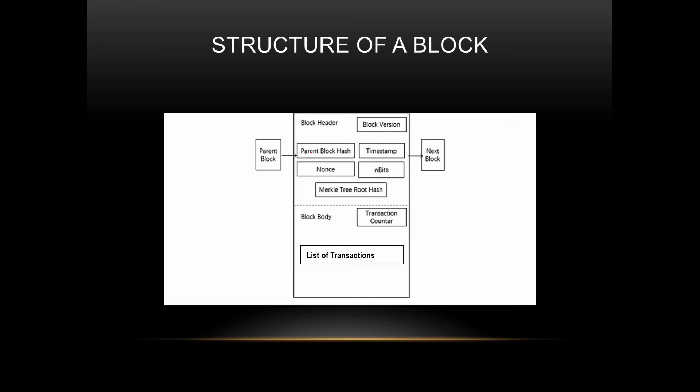In the block header, there is a version of the block, a parent block hash which stores the previous block's hash, and a timestamp representing the epoch time at which the block was mined. There is also a nonce — which is just a number to be explained in the next class — and n-bits, known as the difficulty, also stored in the block header.